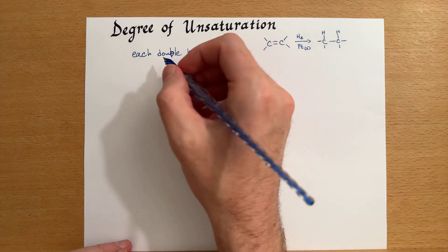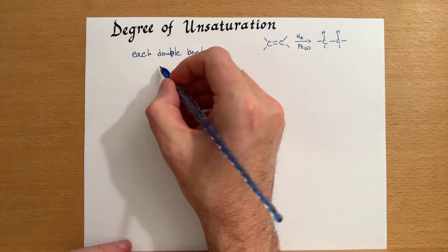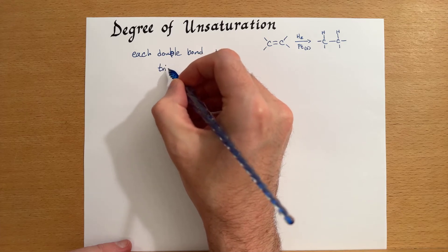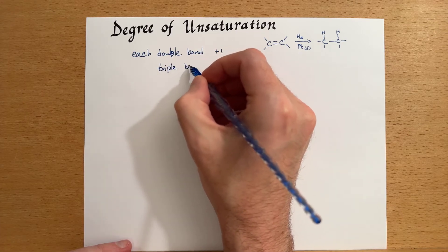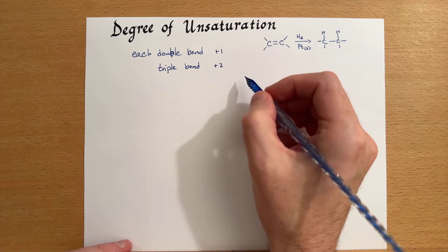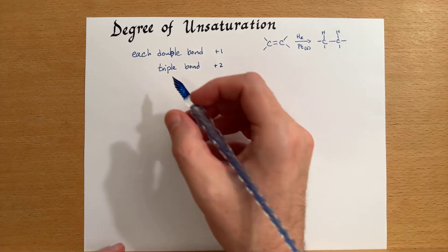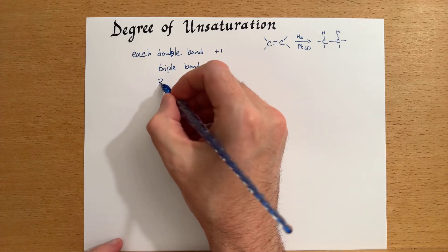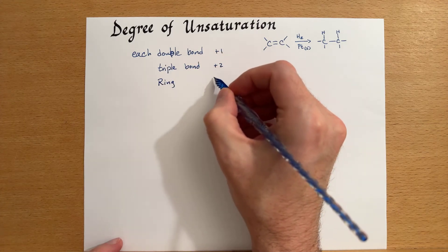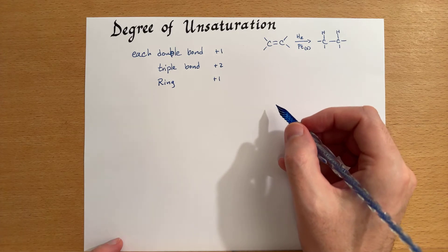For each triple bond, that adds two degrees of unsaturation. And a ring adds a degree of unsaturation.